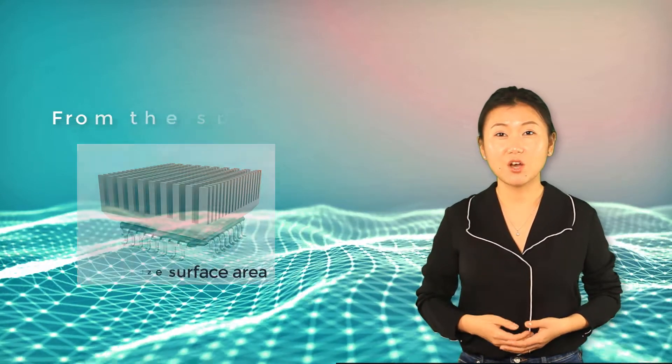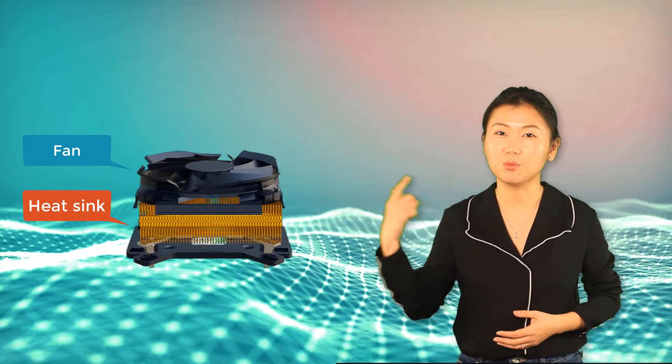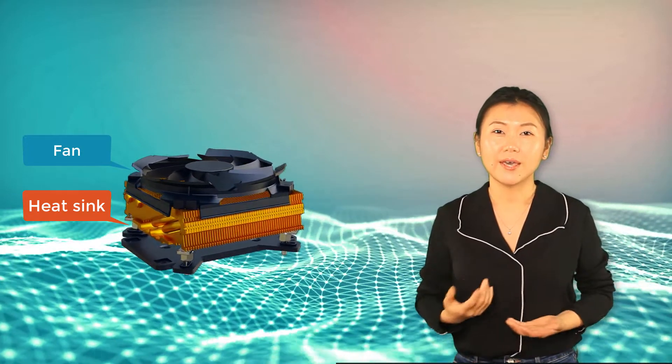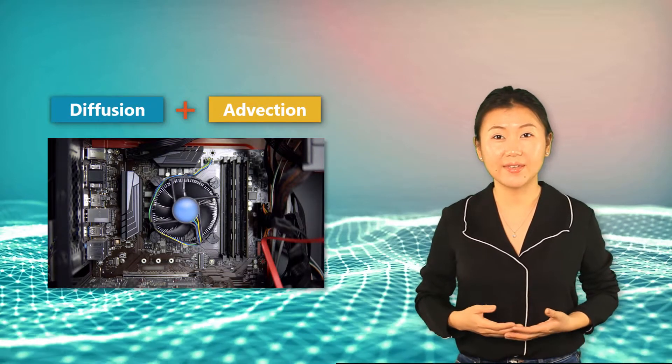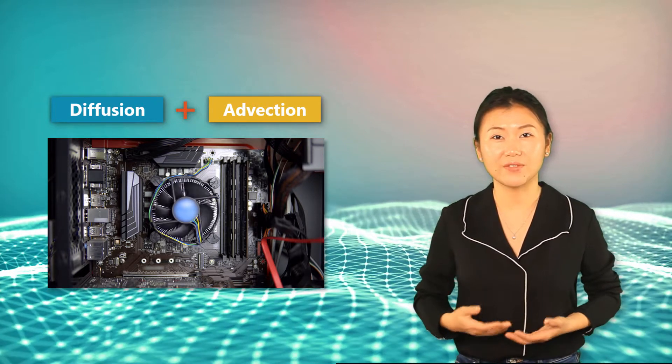In addition, it's also common that the CPU system is equipped with a fan to remove additional heat. In this case, advection also occurs as the fan continually forces cool air over the hot surfaces of the heat sink.